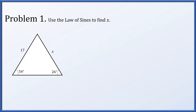Problem one: let's use the law of sines to solve for this missing length, x. The sine of an angle, 54 degrees, divided by the length across from it, x, will be equal to the sine of an angle divided by the length across from it for all choices in one given triangle. So sine 54 degrees over x equals sine 26 degrees over 17.